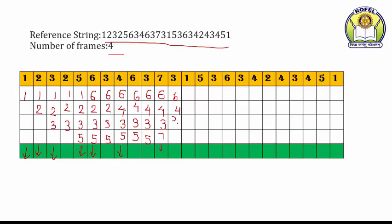Then 3 — 3 is already in the memory, so 6, 4, 3, 7 — no page fault, no arrow. Then 1 — 1 ke liye aap kaunse pages replace kar sakte ho among 6, 4, 3, 7. 3 has been used recently, 7 bhi use ho chuka hai, then 3, then 6, and 4. Sab se purana page number 4 hai. So replace page number 4 with page number 1. Frames: 6, 1, 3, 7. That is a page fault.